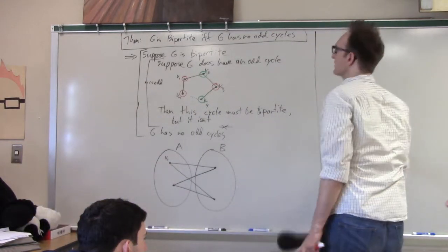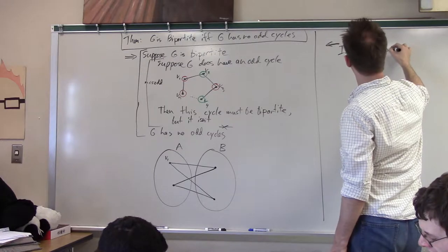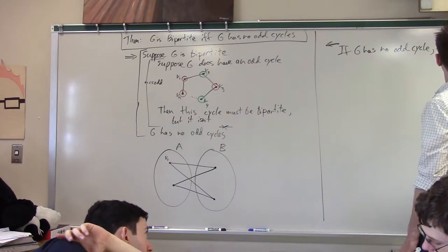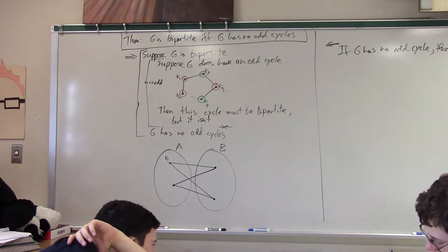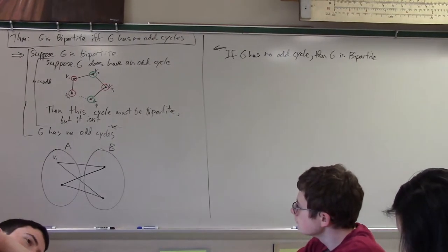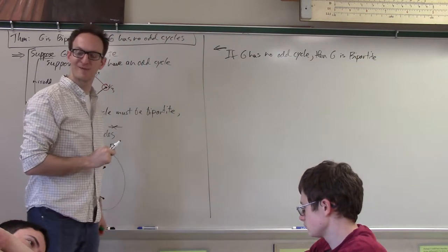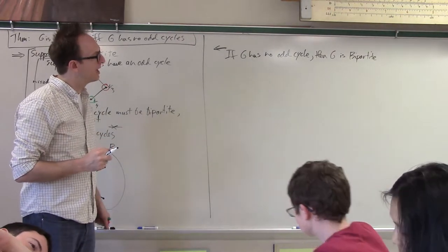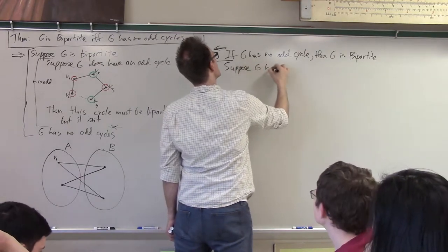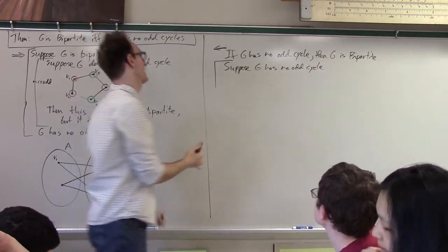This is the easy half. Now comes the hard half, which is this direction. So now I want to prove: if G has no odd cycles, then G is bipartite. This is much less obvious, and we didn't do this in class, and it wasn't a homework assignment. We copied this off the internet, and the internet figured out how to do this. The logic is kind of tricky. Here's what we do: suppose G has no odd cycles. We want to show that G is bipartite.